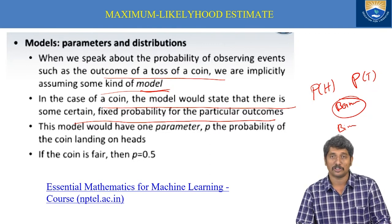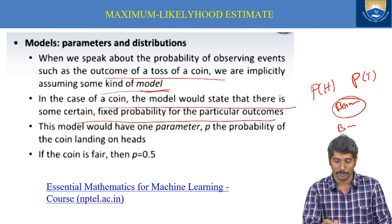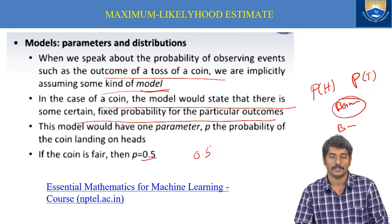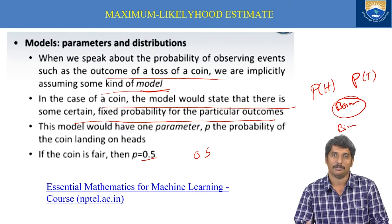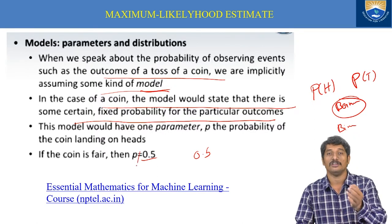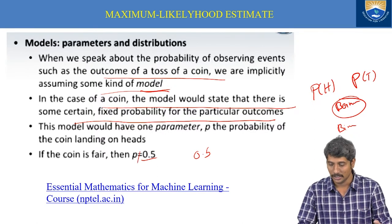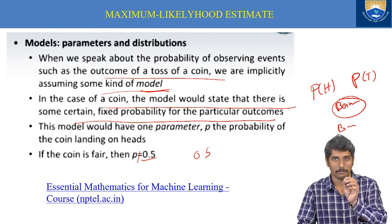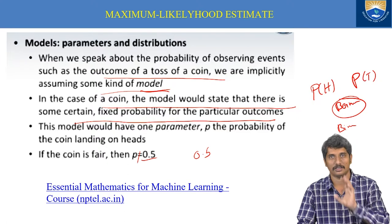We say that a coin is unbiased if the probability of getting heads equals the probability of getting tails — that is, they have equal probability. If p is not equal to 0.5, then the coin is called biased, meaning there is some deceptiveness in the coin.